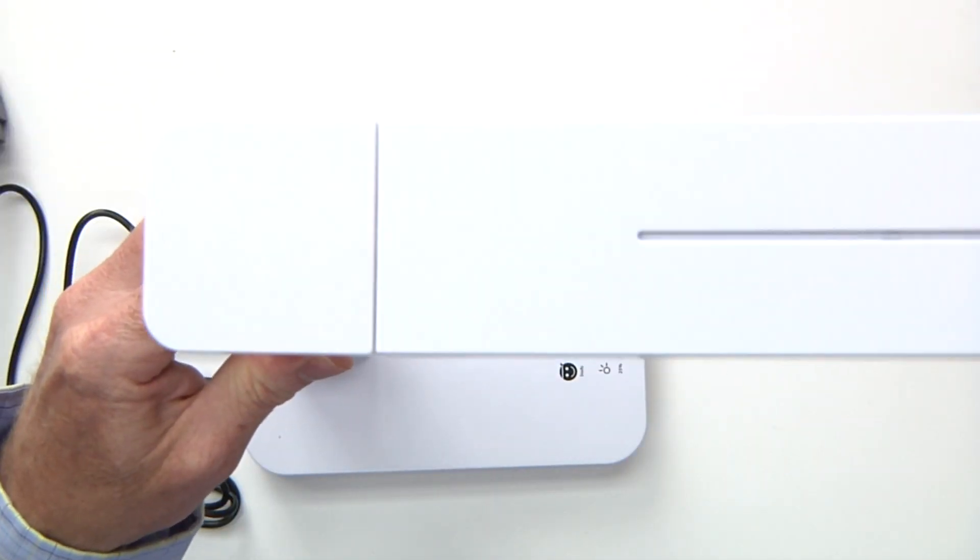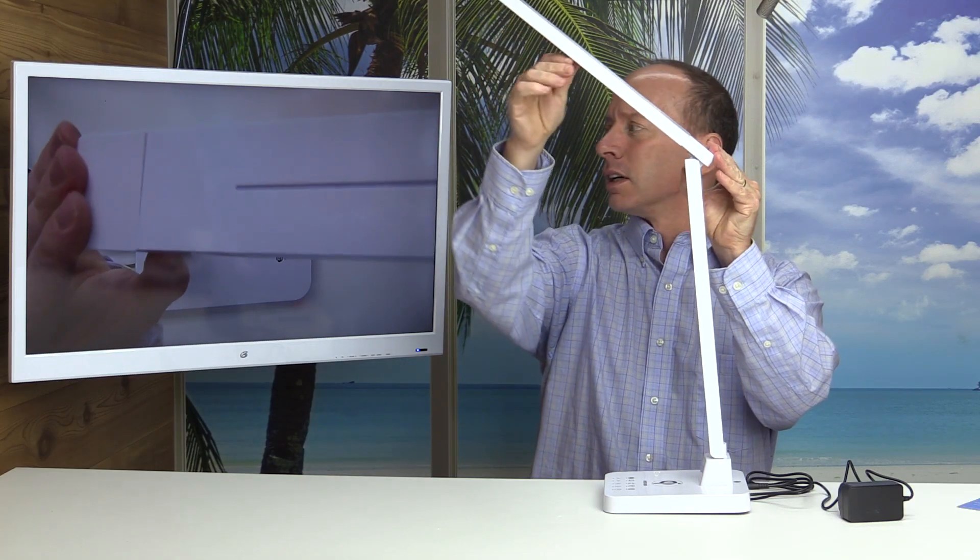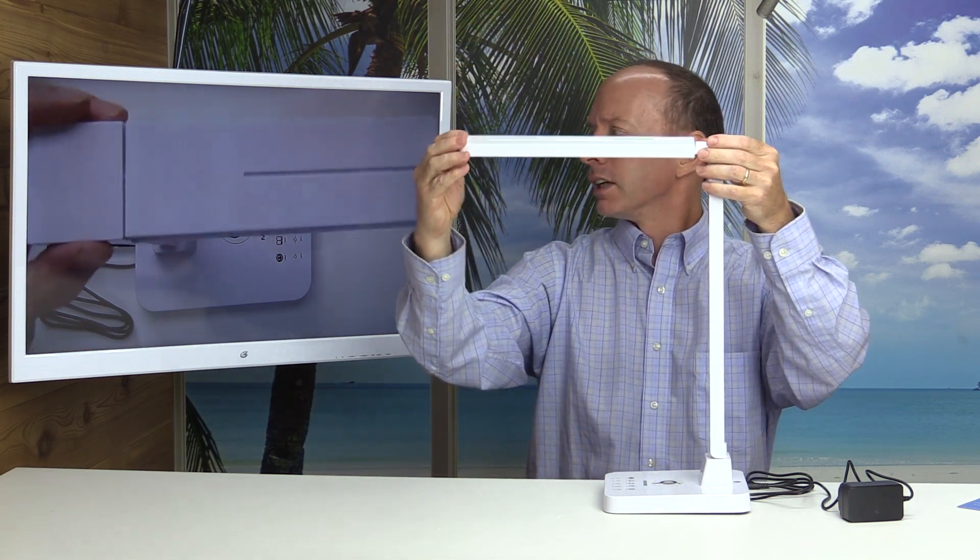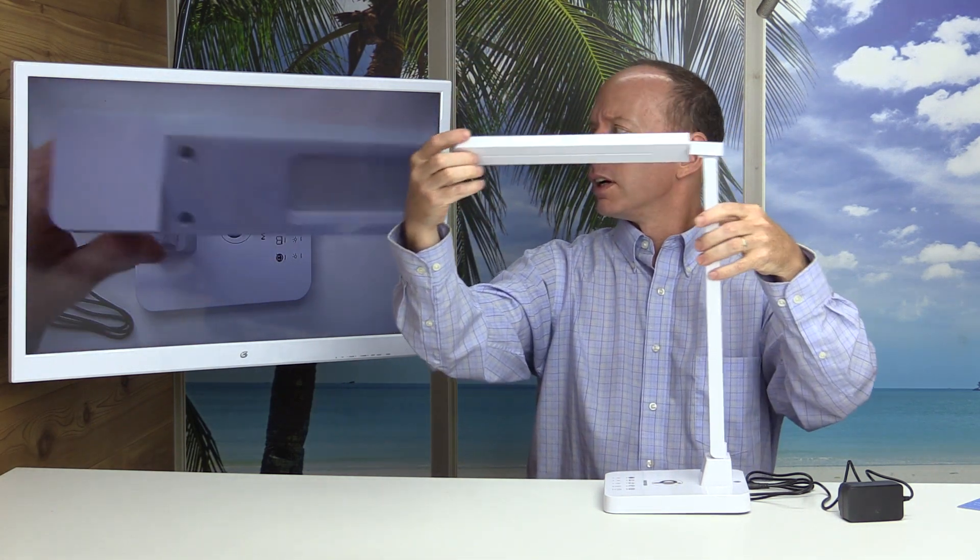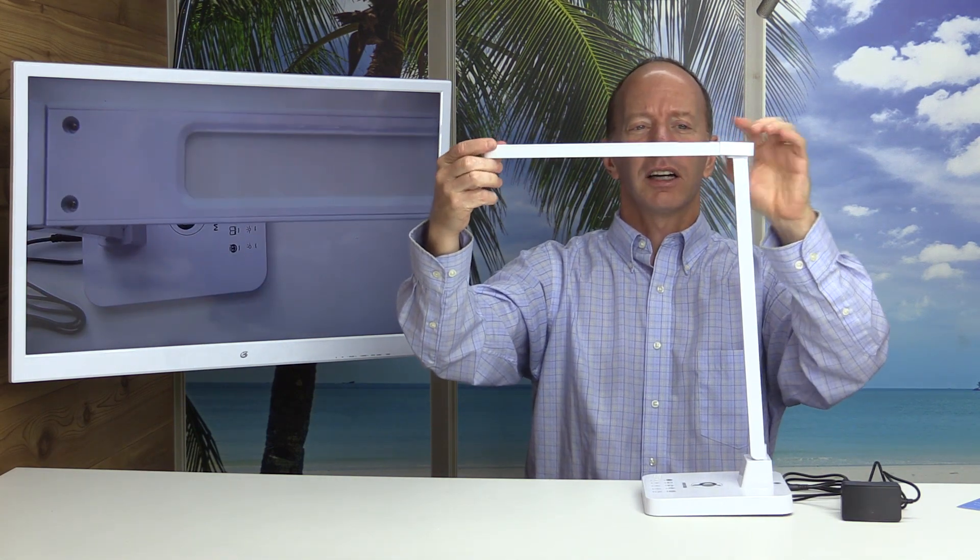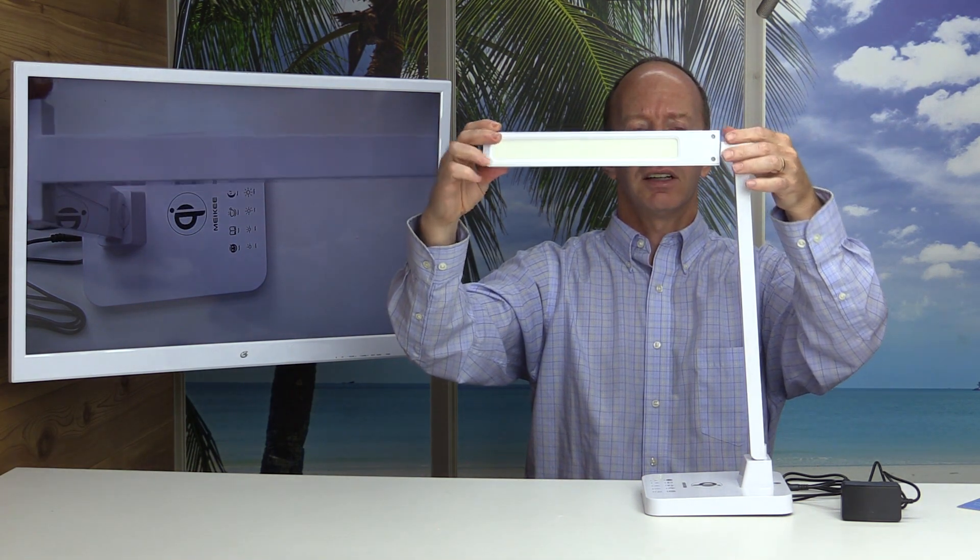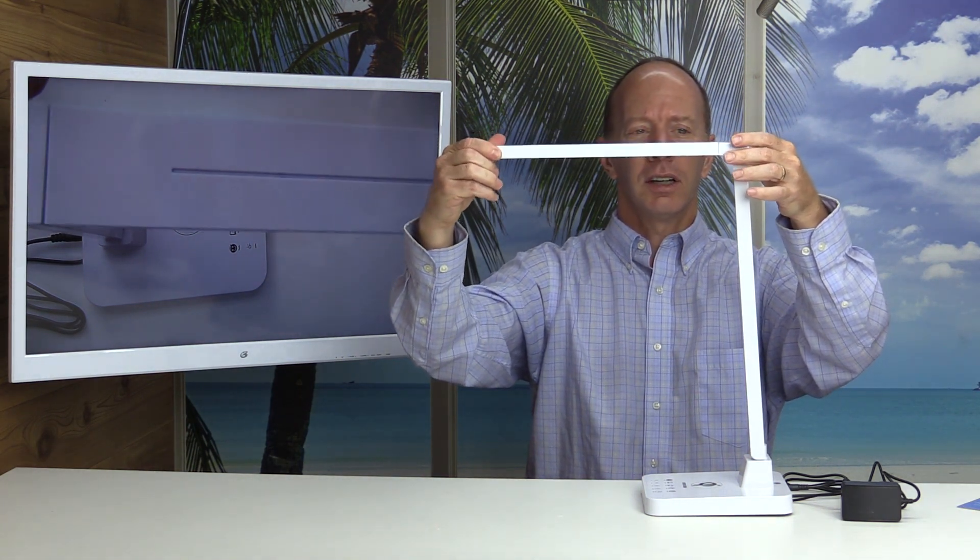So you can see this can rotate in a lot of different directions. Here is the LED light itself. And you can see that can point up to the side, down, and to the other side. Really nice.